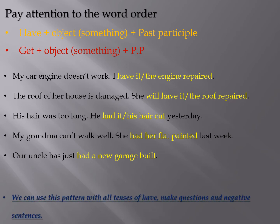We can use this pattern with all tenses of 'have,' or when we make a question or use negative sentences. I'd like you to have a look again at these sentences. In the first sentence, the tense is the present simple, so I use the verb 'to have' in the present simple: 'I have.' The second one is the future — the roof of her house is damaged, she will have it repaired — so it is future.